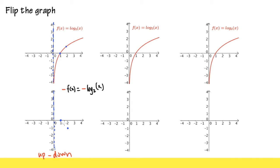To show why we get the new graph: when x is 2, plugging into the new equation gives us negative log base 2 of 2. Log base 2 of 2 is 1, so we get negative 1. Originally it was (2, positive 1), but now it will be (2, negative 1). The point (1, 0) stays on the x-axis because negative log base 2 of 1 equals negative 0, which is still 0. So just remember to flip the graph upside down when you multiply the whole function by a negative.